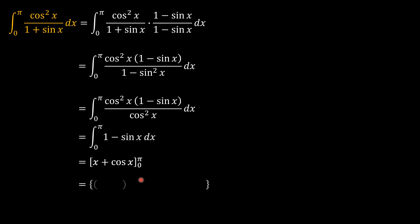So substituting in the limits we have pi minus 0 plus cosine pi minus cosine 0. Cosine pi is negative 1. Cosine 0 is 1.